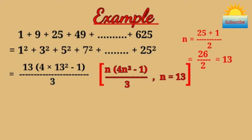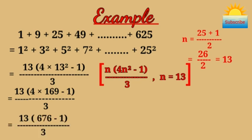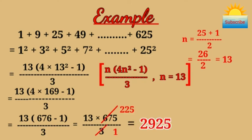This equals 13 × (4 × 169 - 1) / 3, or 13 × (676 - 1) / 3, or 13 × 675 / 3, which equals 2925.